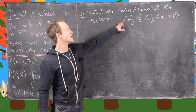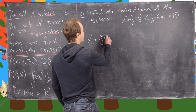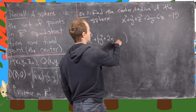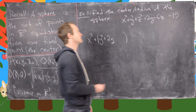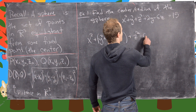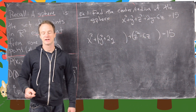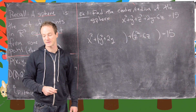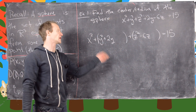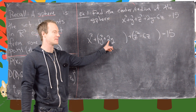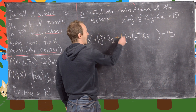I'm going to rewrite this and give myself space to complete the square. So I'll write x² + (y² + 2y + ___) + (z² − 6z + ___) = 15, leaving gaps to add whatever is needed. To complete the square in y, we take half the coefficient of y: half of 2 is 1, squared is 1. So we add 1 inside and also add 1 to the right side.